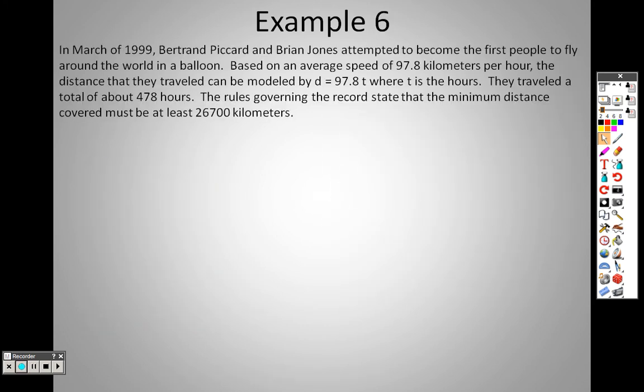So example 6. In March of 1999, Bertrand Picard and Brian Jones attempted to become the first people to fly around the world in a balloon. Based on the average speed of 97.8 kilometers per hour, the distance that they traveled can be modeled by this right here.